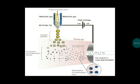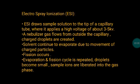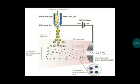First, evaporation occurs — the nebulizer flow helps to spray the sample and the solvent evaporates due to the charged particle movement. Next is fission. This evaporation and fission cycle repeats, and this is how the sample is converted into molecular ions and liberated into the gas phase or inlet of MS.